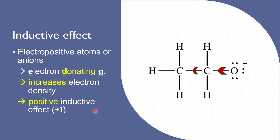On the other hand, the oxygen anion in this ethoxy ion already bears a negative charge. So although oxygen atoms are more electronegative than carbon, the oxygen anion has low electronegativity and repels electrons, and is hence electron-donating. This oxygen anion pushes electrons away from itself, thus increasing the electron density of the molecule. An oxygen anion is said to have a positive inductive effect.